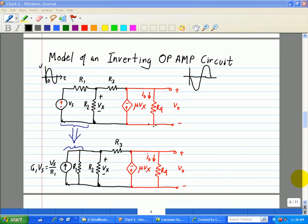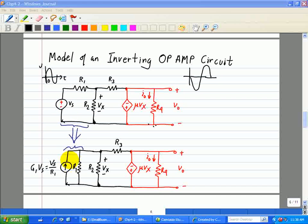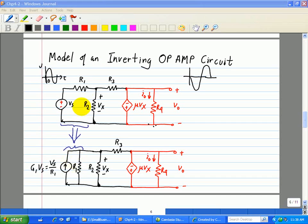So how do we solve this circuit? Well, the first thing we note at the input side of the circuit is that Vs and R1 can be transformed into a parallel combination, such that we have Vs divided by R1 in parallel with this resistor R1. So we did a source transformation from a voltage source in series with R1 to a current source that is in parallel with R1.